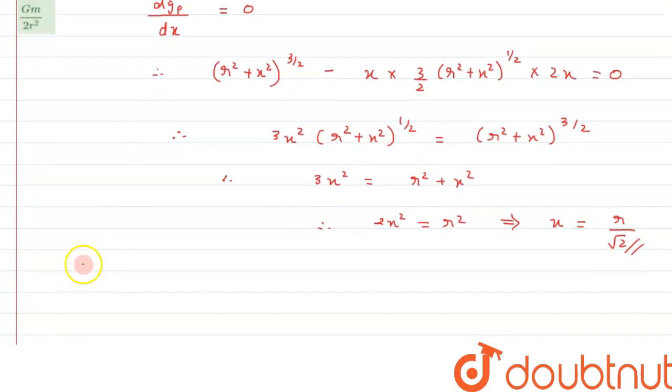Now we can write from equation 1, G_P, that is at point P, and its maximum value can be written